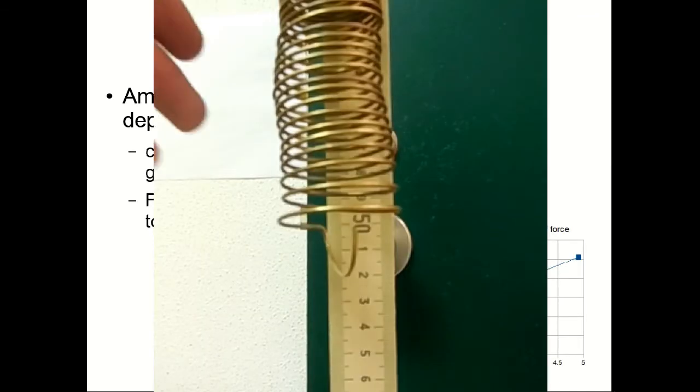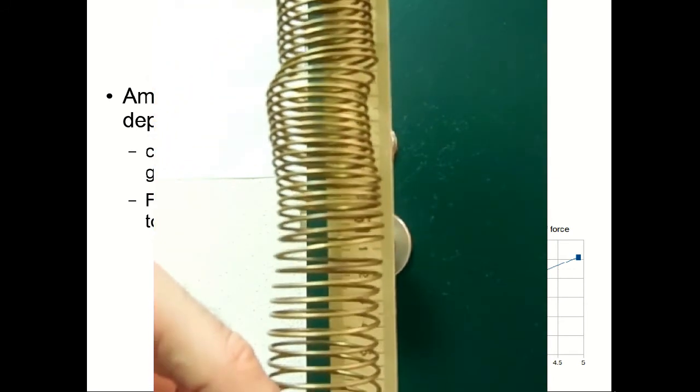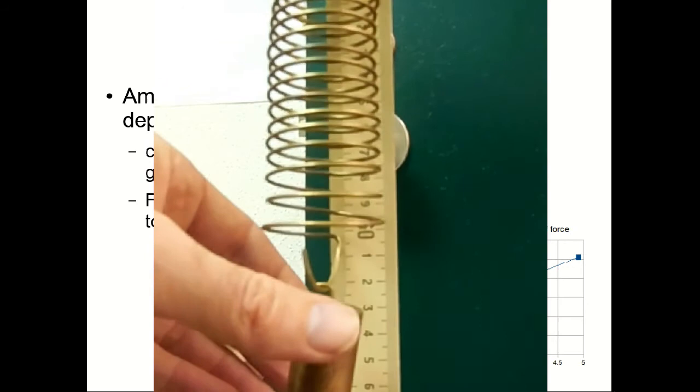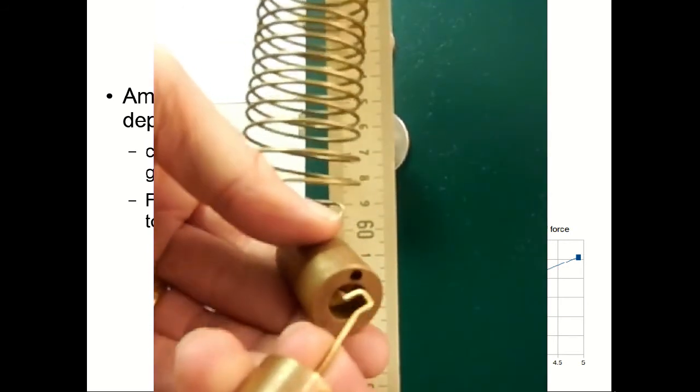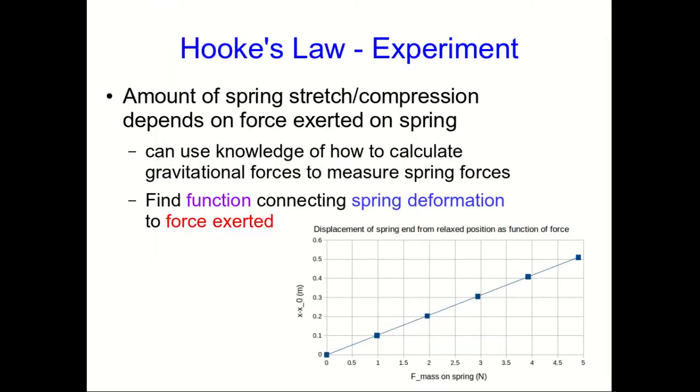So we hang some mass off of the spring and see how much it stretches and hang some more mass off of the spring and see how much more it stretches and now we plot the x component of its displacement versus the x component of the force exerted on it. And we see that it's a lovely straight line.